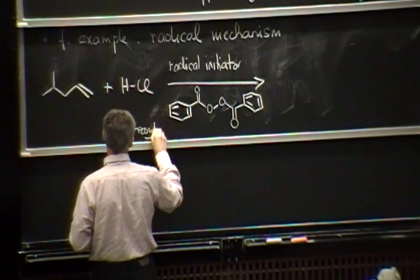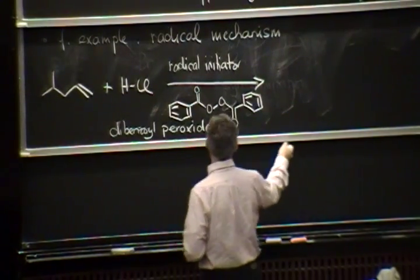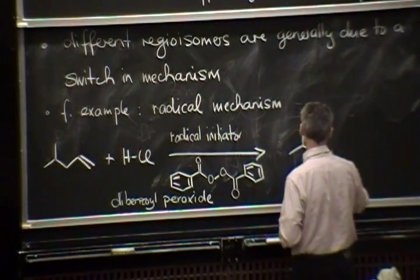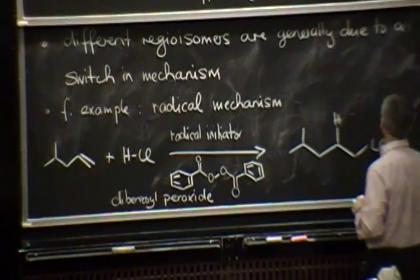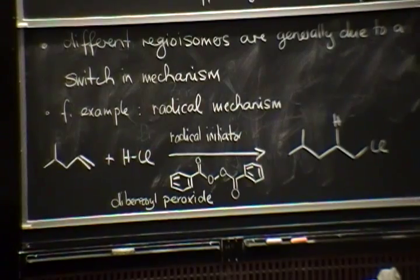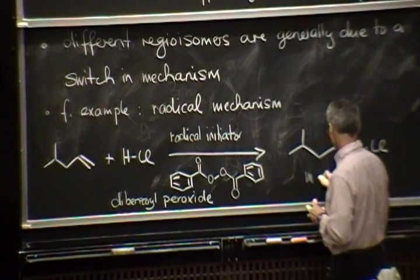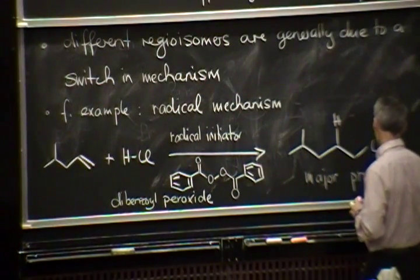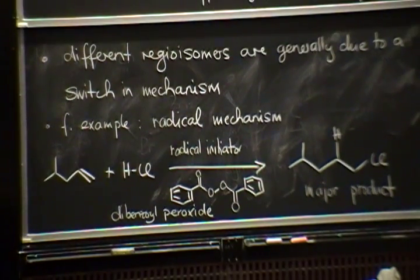I can get, selectively, the other product. So, I now end up with this chloride in this position. And this is our major product. And that exactly answers the question. How do I get the other regioisomer?